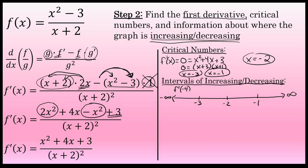When I substitute negative 4 into the first derivative, if I get a positive value, the function is increasing at every x value in the interval from negative infinity to negative 3. It doesn't matter what the actual value is — if it's negative, the function is decreasing; if it's positive, it's increasing. Substituting negative 4 into the first derivative yields a positive number, so the function is increasing throughout the entire interval from negative infinity to negative 3.